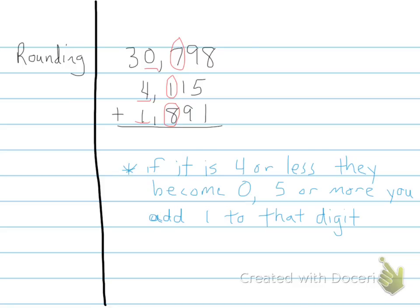So getting back to our number, we're looking at 7. 7 is 5 or more, so we would add 1 to this number here. So it would become 31,000. Then we look at the next one, 4,115. That number 1 is less than 5, or 4 or less, so that would go back to 0. So we would have 4,000. And then we go to the next number, 1,891. 8 is 5 or more, so that would make the 1 go up to 2, so about 2,000.